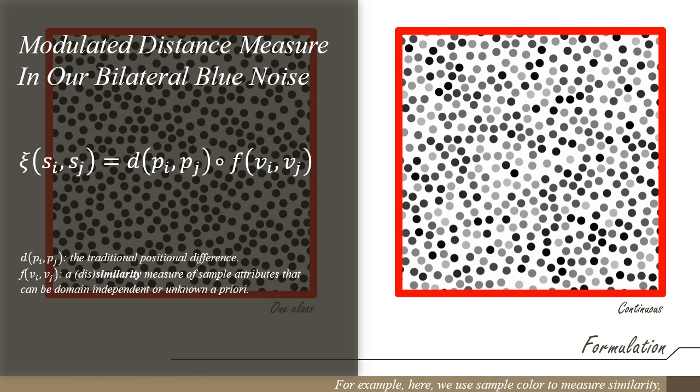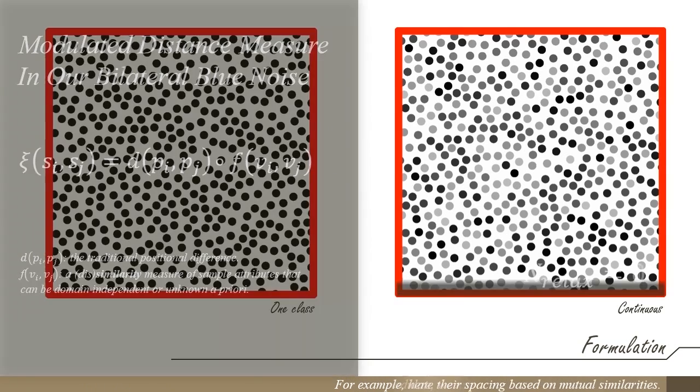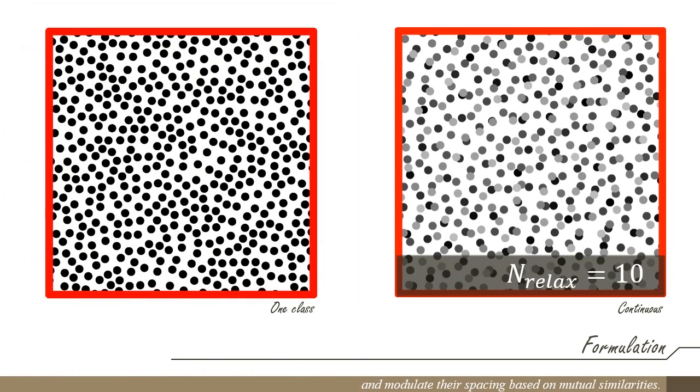For example, here we use sample color to measure similarity and modulate their spacing based on mutual similarities.